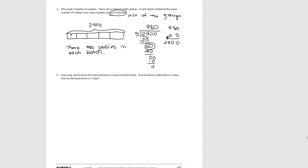The question also asks how many cookies were in four batches. Since we know how many were in one batch, we multiply 480 by 4 to get the amount in four batches: 480×4=1,920. So there are 1,920 cookies in four batches.